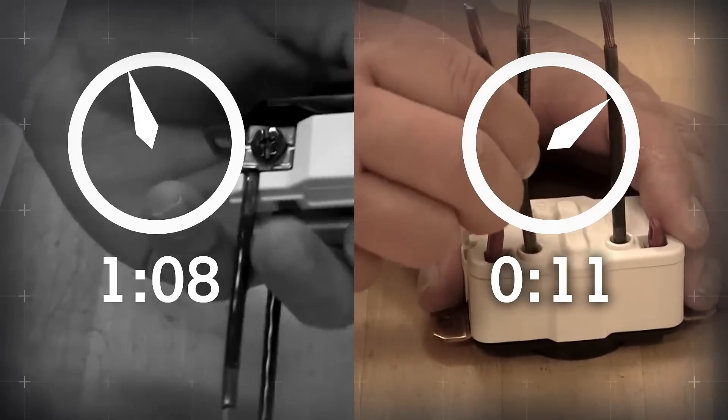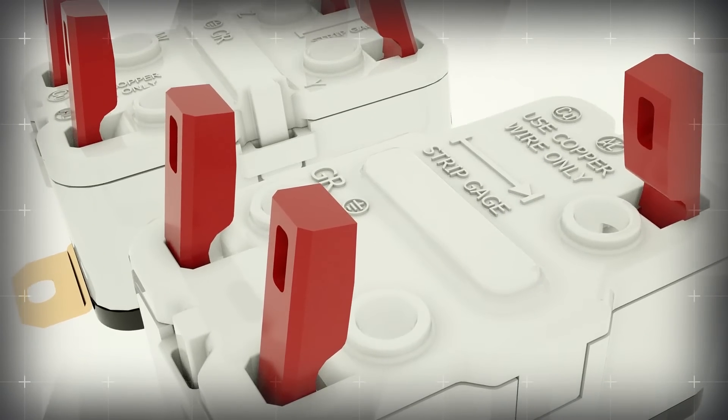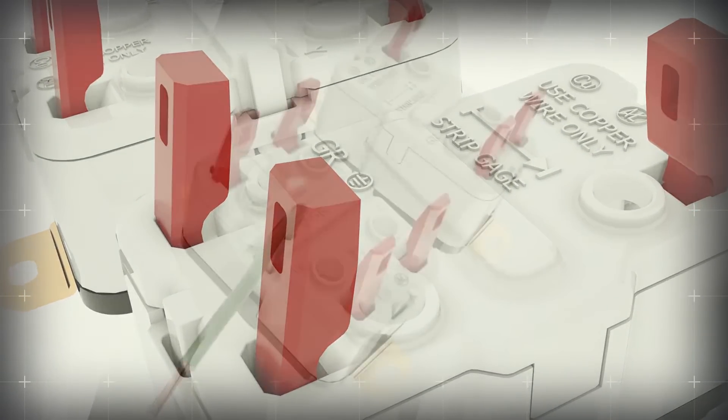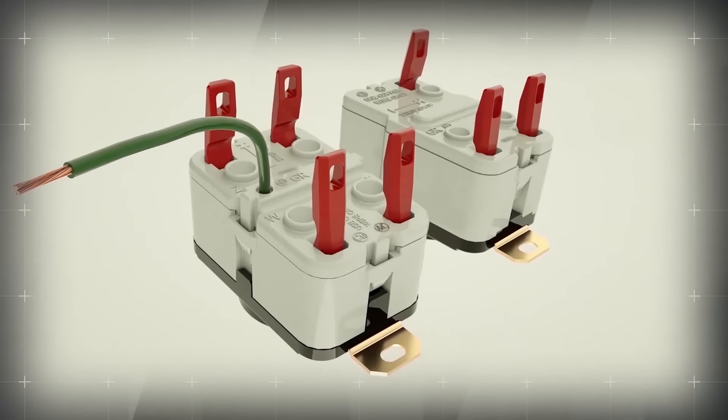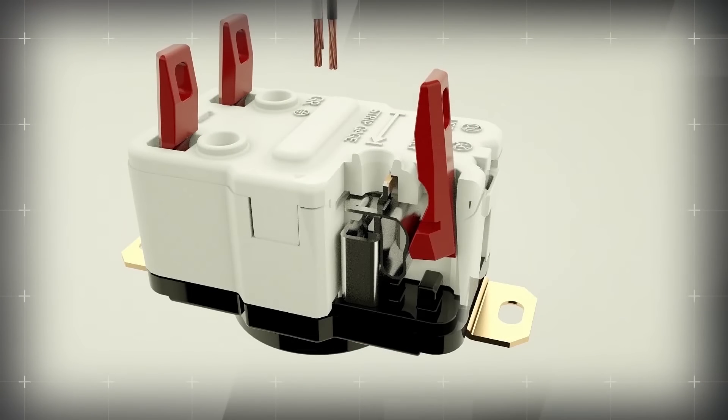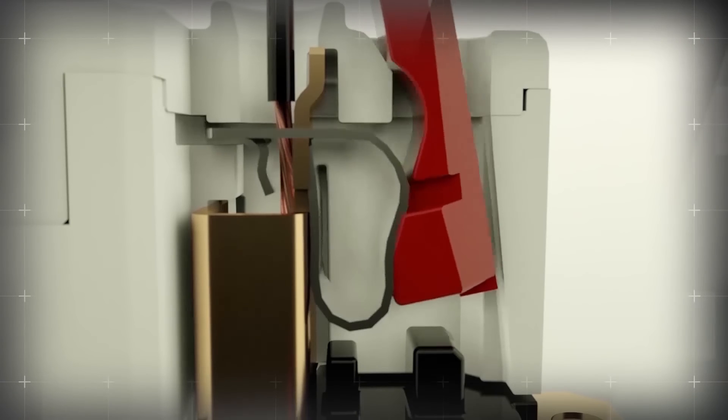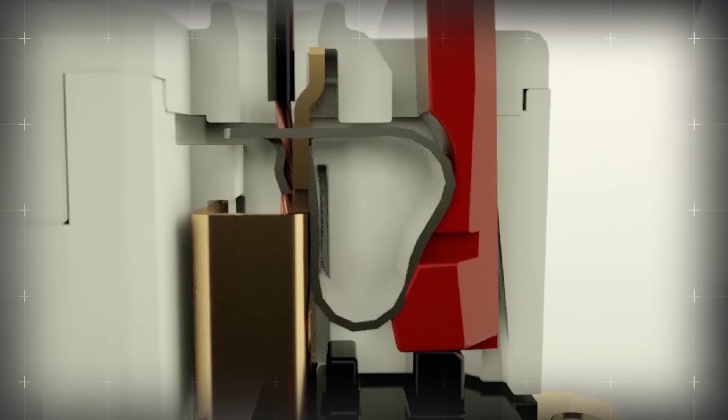So how does it work? Let's take a look at a single phase receptacle installation. Each unit's red plungers are shipped in the up position for even greater installation speed. Simply insert each wire into its adjacent compartment. As the wire enters the spring mechanism in the bottom of the compartment, press the red plunger back down to engage the spring for a secure, tight,